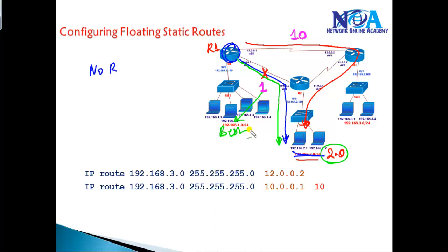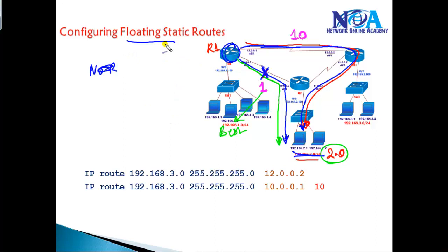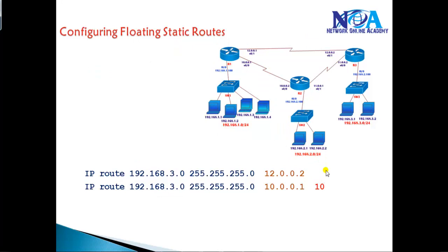If the primary route fails, the routing table will automatically install the second route, and Router 1 will still be forwarding traffic via Router 3 and then Router 2 to access the resources. This provides redundancy, and this concept we call floating static routes — where we can have multiple static routes for the same destination using different administrative distance values.